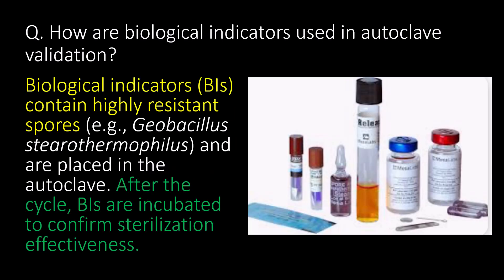How are biological indicators used in autoclave validation? Biological indicators (BIs) contain highly resistant spores — e.g., Geobacillus stearothermophilus — and are placed in the autoclave. After the cycles, BIs are incubated to confirm sterilization effectiveness.